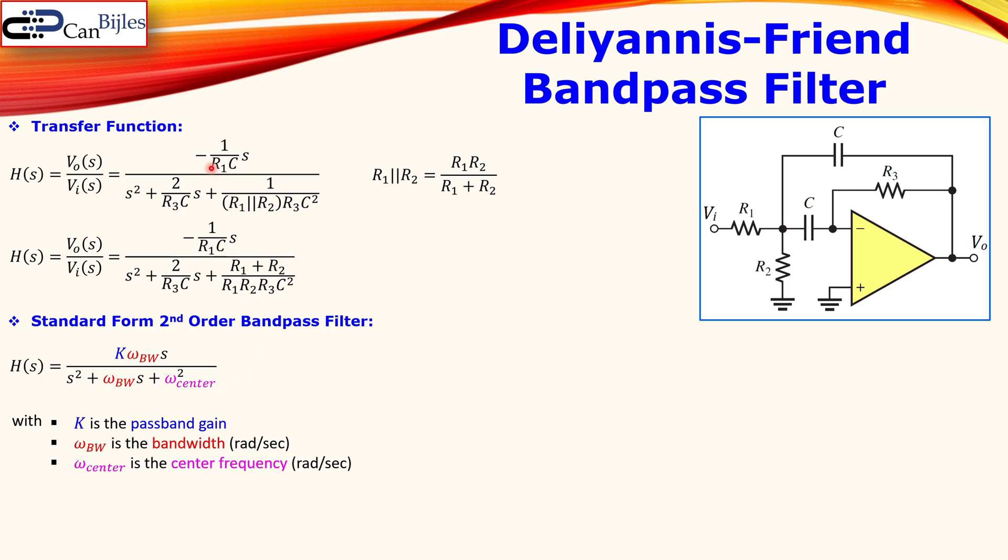Now, if you compare this transfer function for this circuit and the standard form of the second order bandpass filter, you can calculate or make the design equations for this circuit. Now comparing the terms, we see here this K times the omega bandwidth is this 1 over R1 C. Now you can ignore this minus sign for the moment. That is just the sign inversion. The second comparison is actually this one. So this 2 over this R3 C is this omega bandwidth. So you can right away see what the bandwidth of our circuit is using the resistor R3 and the capacitor C.